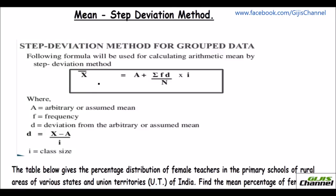Hi, this is Vasari from at home. In this video, let us learn how to calculate the mean using the step deviation method. The steps are listed out here. For the step deviation method of calculation for grouped data, the formula is x̄ = a + (Σfd / N) × i, where N is the total of frequency, a is the assumed mean, d is the deviation, f is the frequency, and i is the class size.